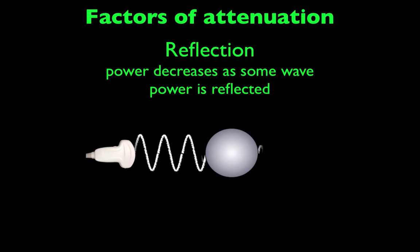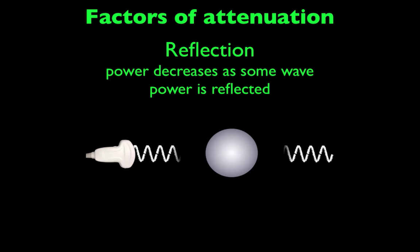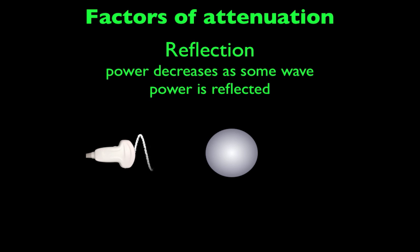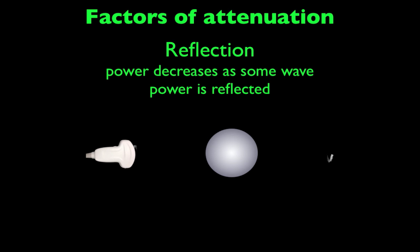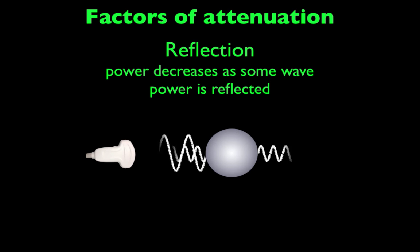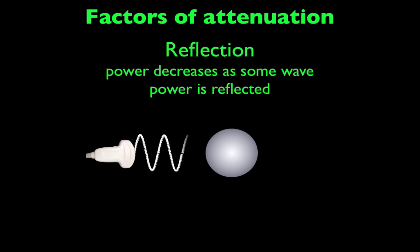The second factor is reflection. Some of that sound wave is going to bounce off structures as it goes down and return to the ultrasound probe. That reflection is actually how we get an image produced — the wave reflects back to the probe and creates an image on our screen. However, reflection also decreases the strength of the ultrasound wave as it travels to deeper structures within the body.